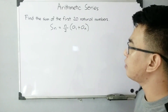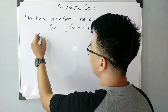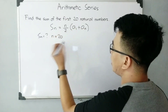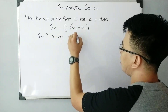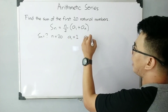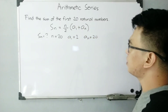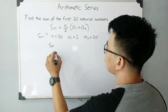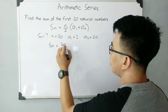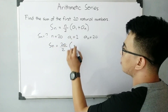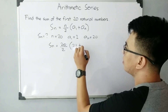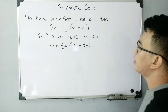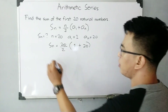S sub n is unknown. N is equal to 20 because we want the first 20 natural numbers. A sub 1 is equal to 1, and a sub n, the last term, is 20. Given these values, let's plug them in: S sub n = 20/2 times (1 plus 20).